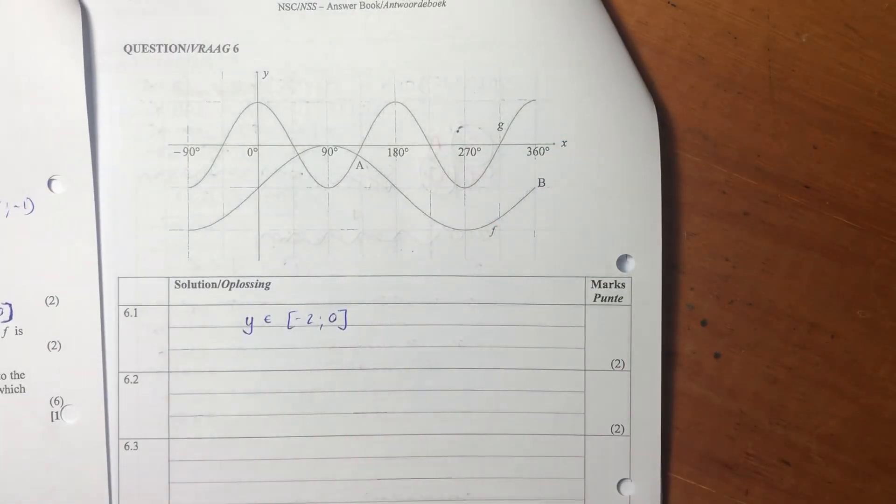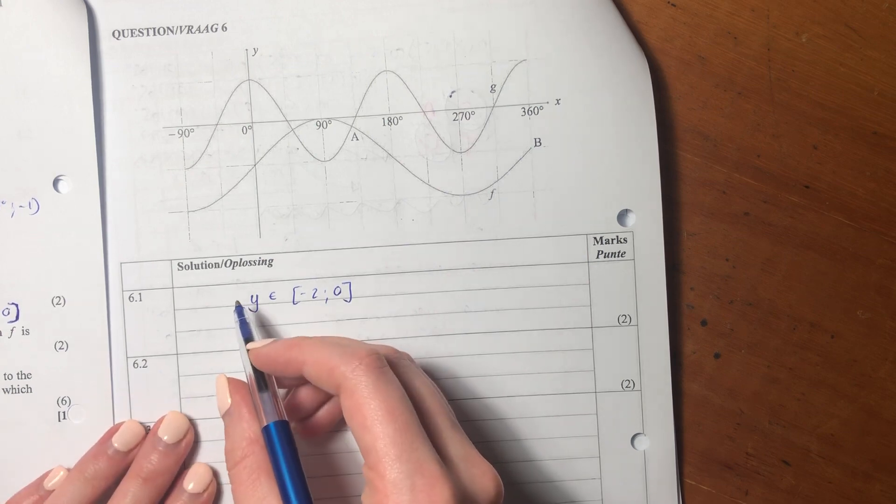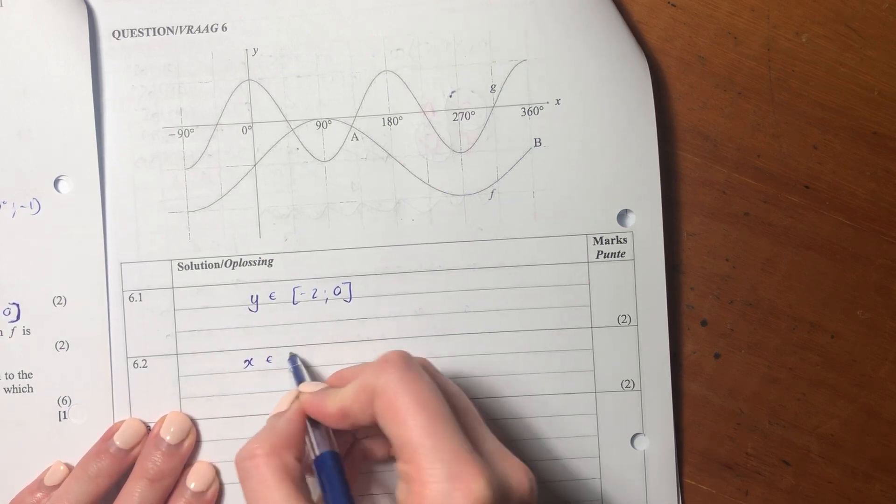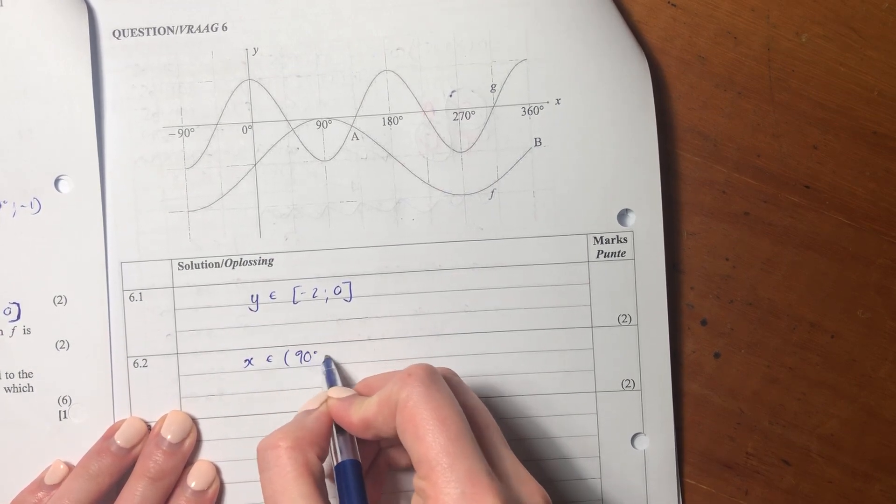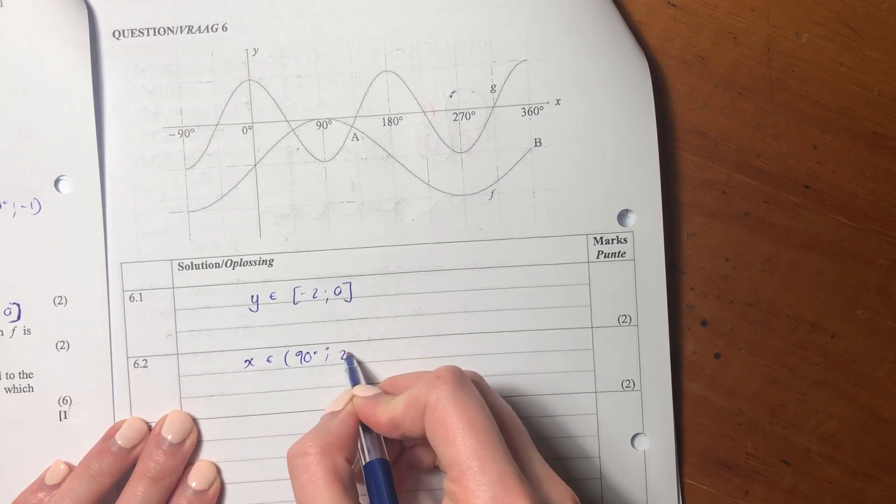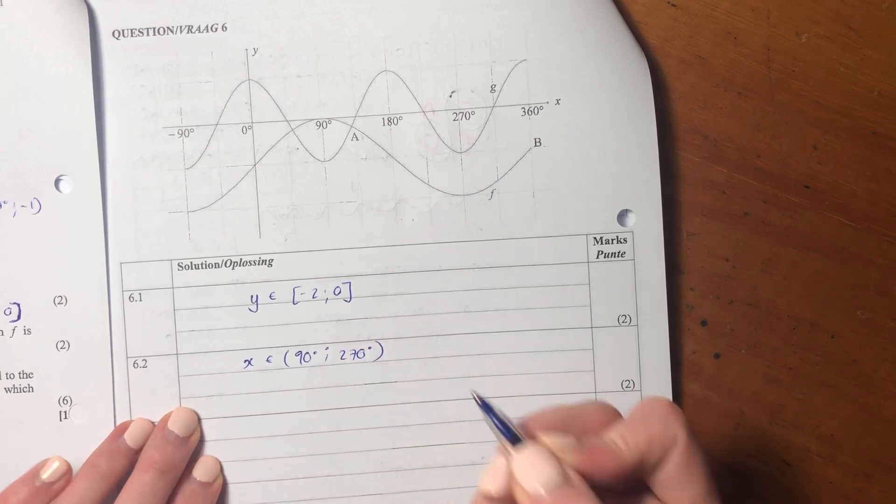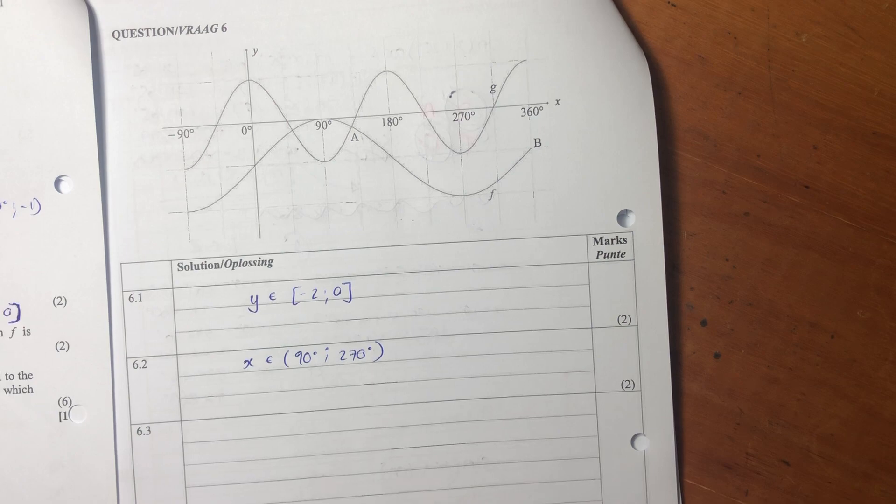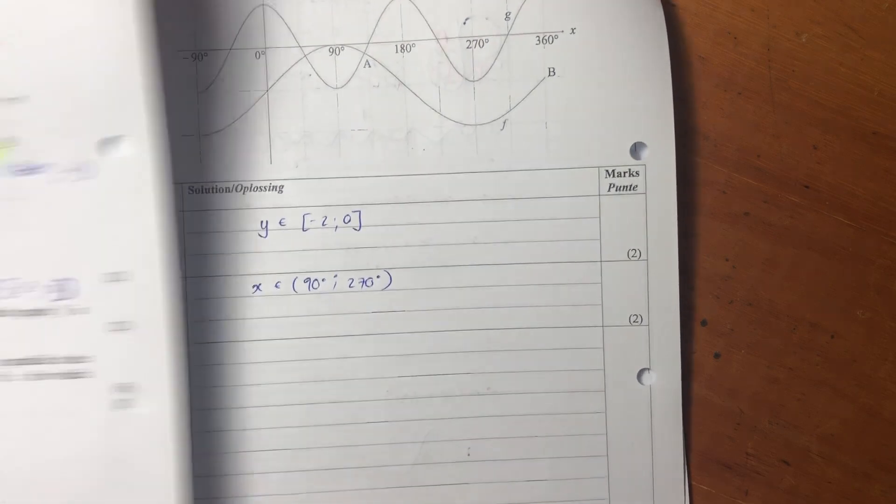So we would say x is decreasing between 90 and 270.